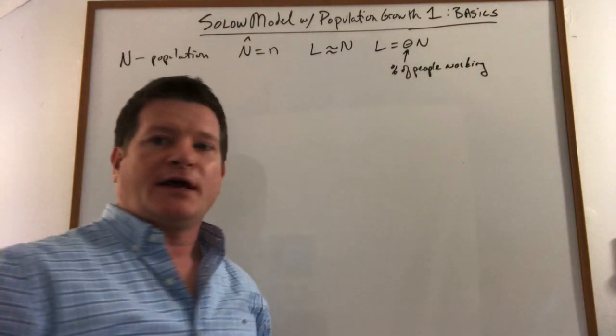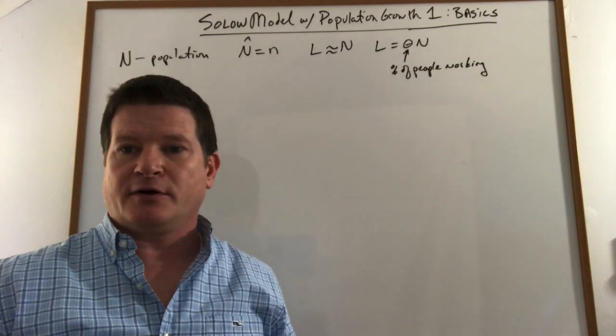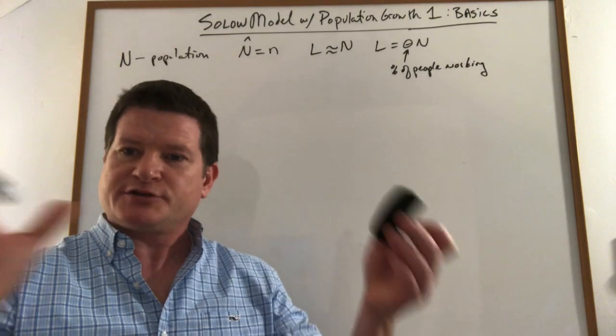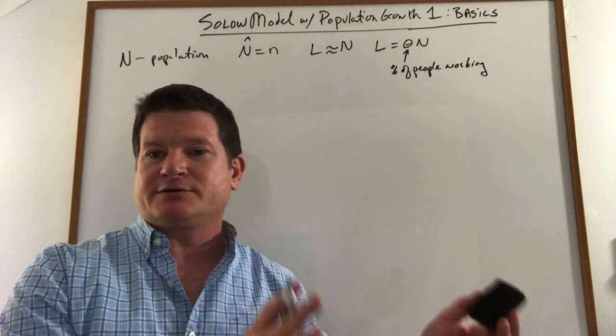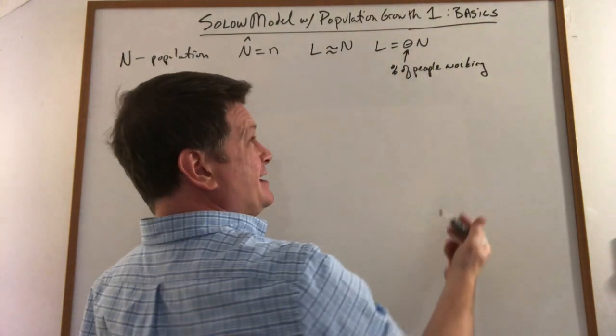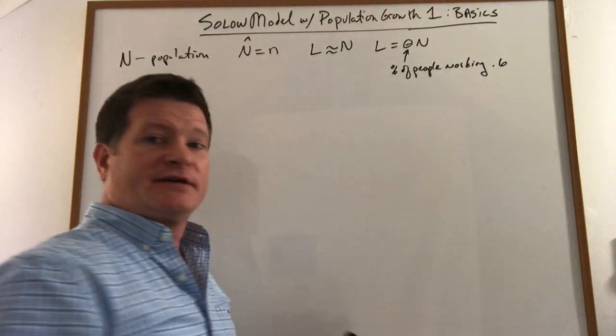That's sort of like your labor force participation rate and your unemployment rate or your employment rate all included in one because it's the fraction of the population working and actually in jobs working. So it's usually pretty constant over time. So let's say 60% or 0.6.